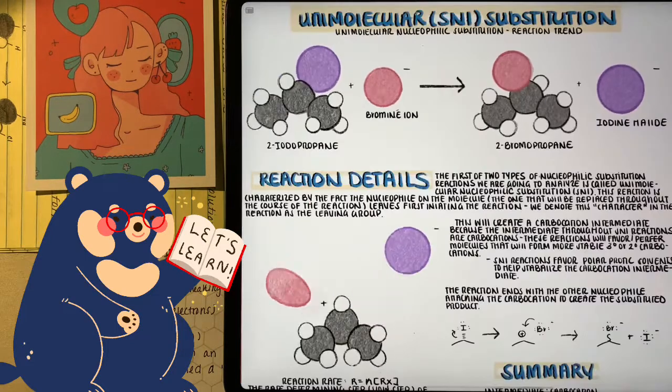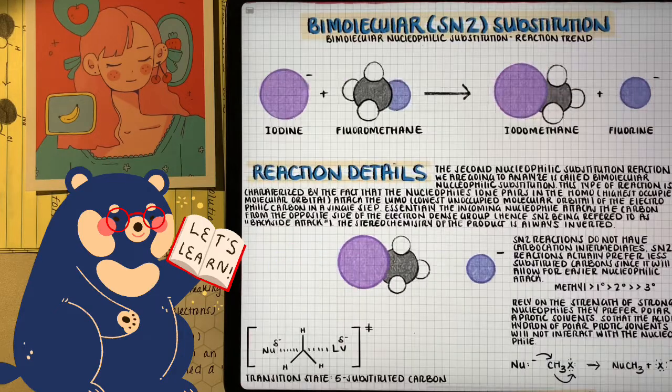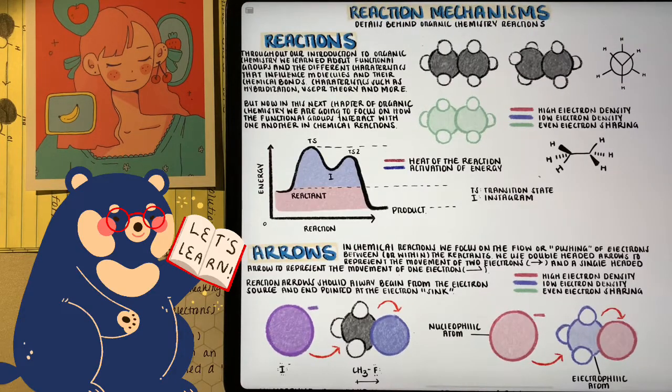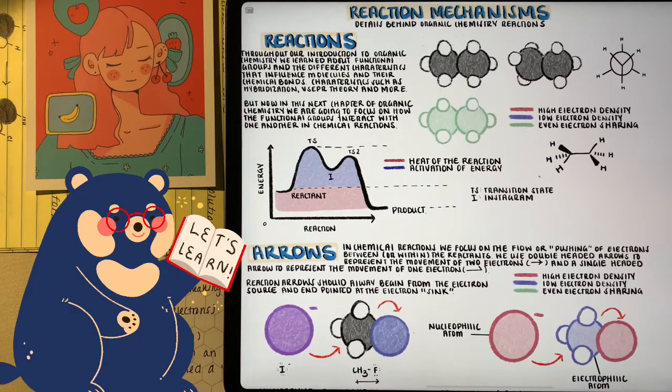And throughout this video, we're going to talk about the two types, SN1 and SN2. Remember in the beginning when we introduced the idea of high electron density molecules or ions, and that's nucleophilic, and we have electrophilic atoms which are low electron density.